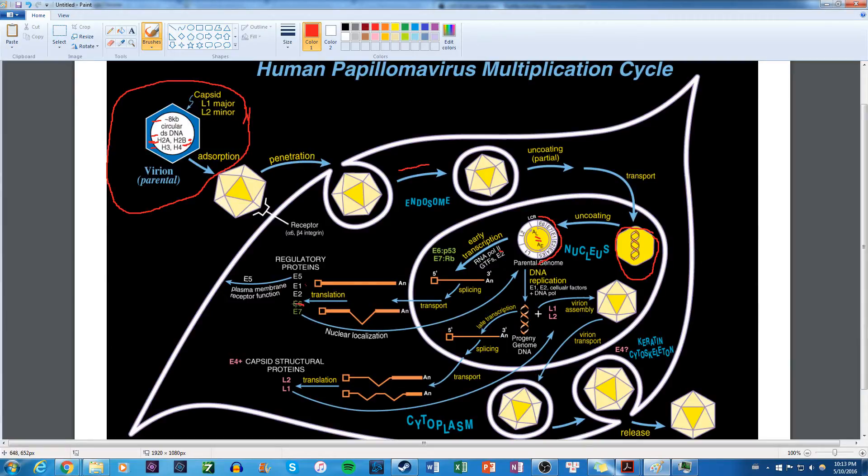So you see here, the E6 and E7 goes back into the nucleus so that it can drive forward the DNA replication. So you have DNA replication of this entire genome. And now you have a bunch. Instead of only having one copy of your genome, you have thousands upon thousands of copies of your genome.